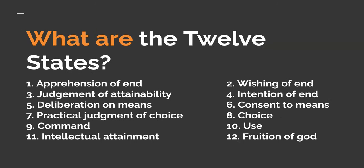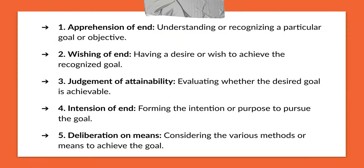So what are the 12 states? The first state is apprehension of end, then wishing of end, judgment of attainability, intention of end, deliberation on means, consent to means, practical judgment of choice, choice, command, use, intellectual attainment, and fruition of goal. I'll be explaining each of these states.